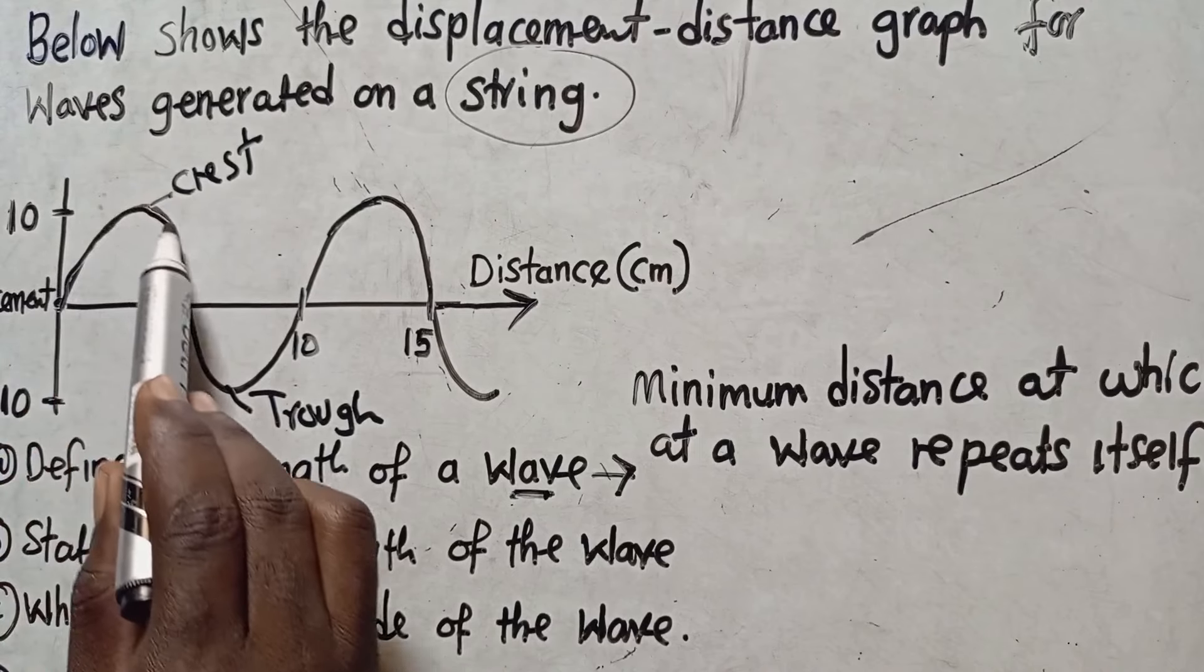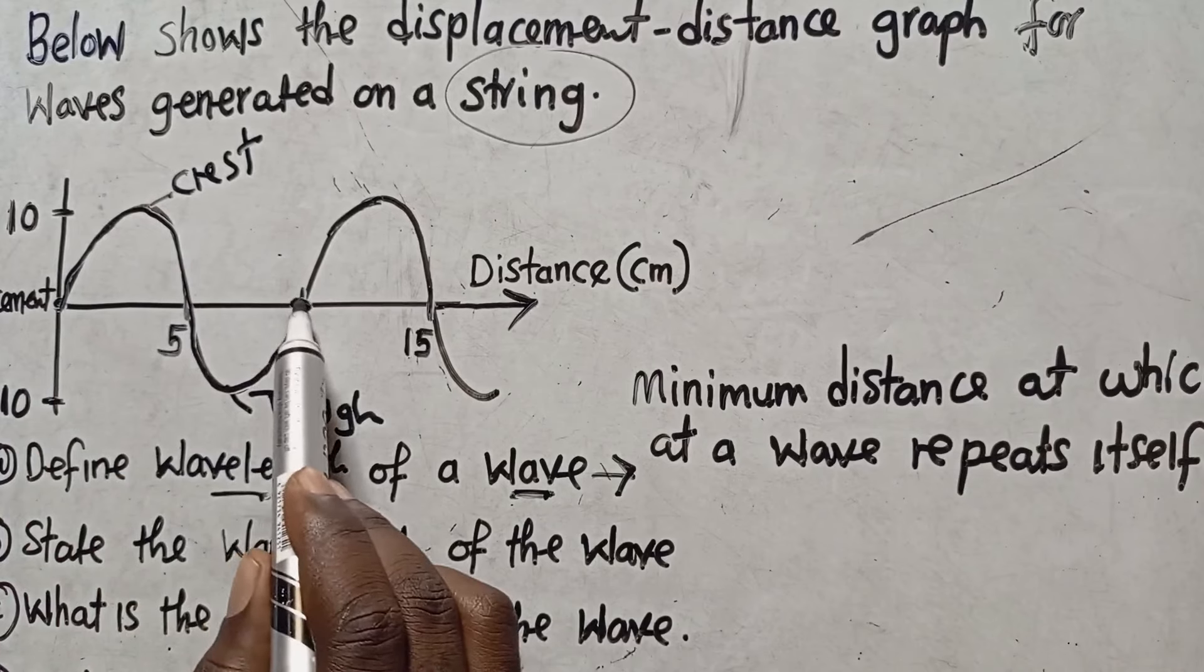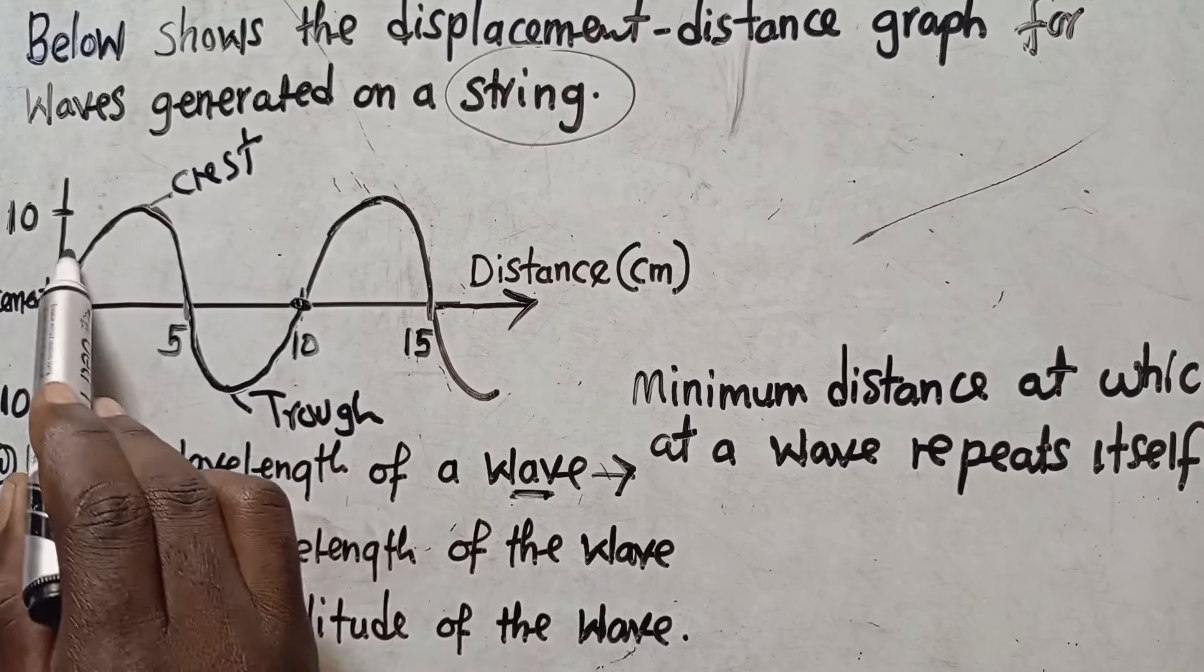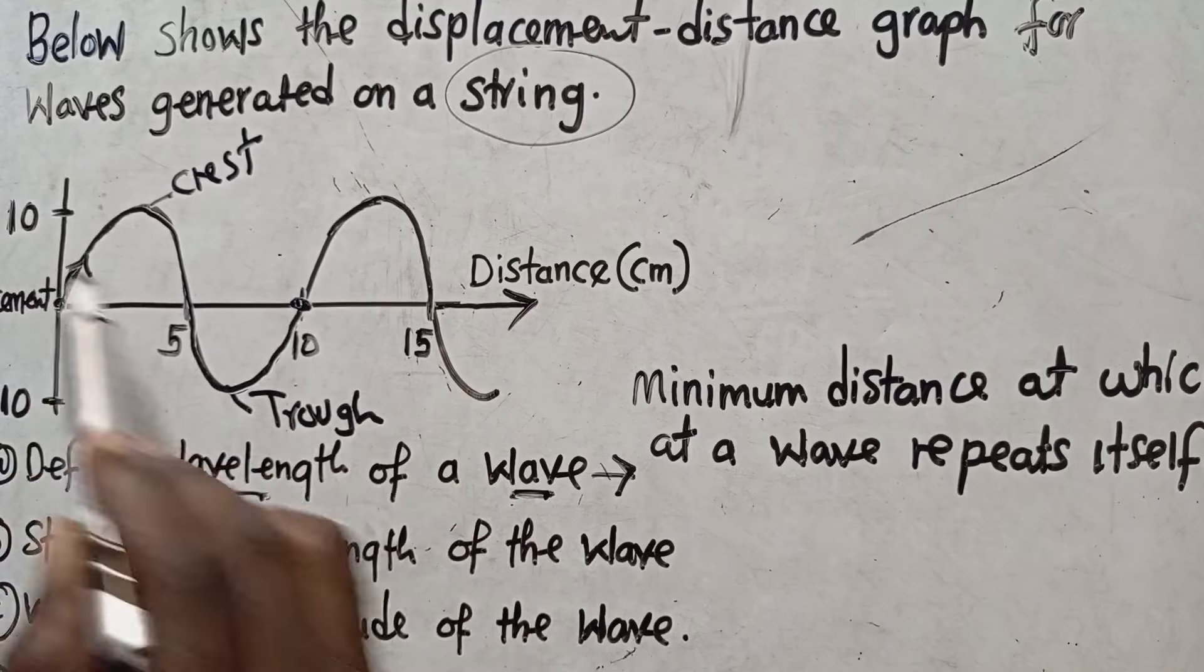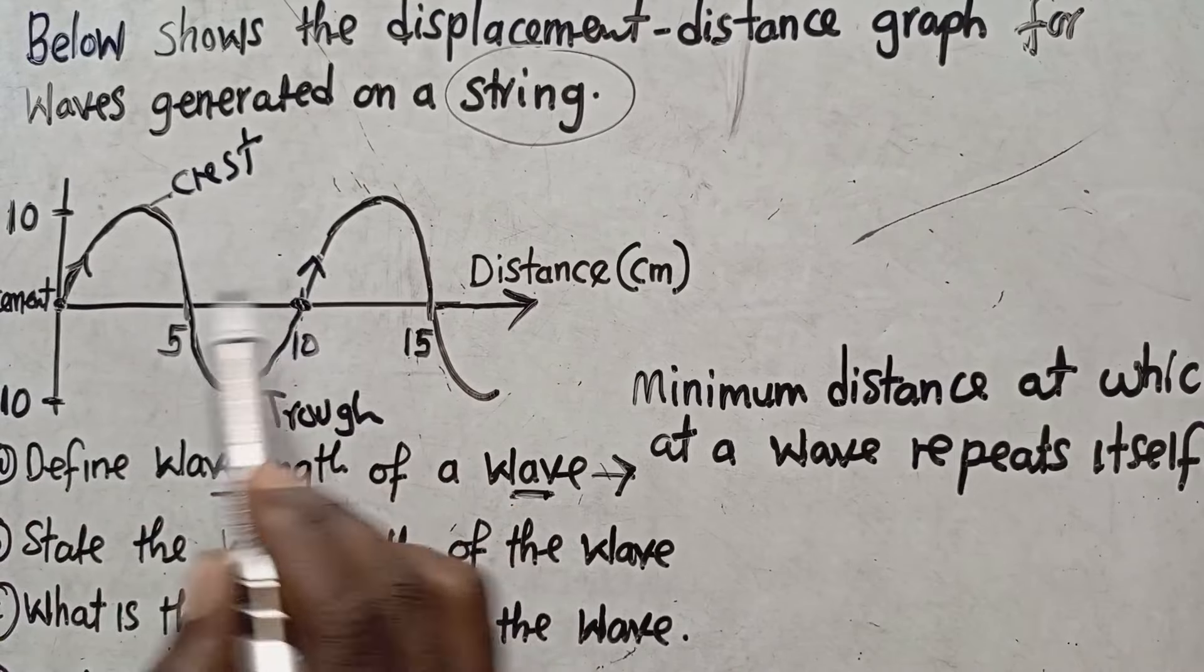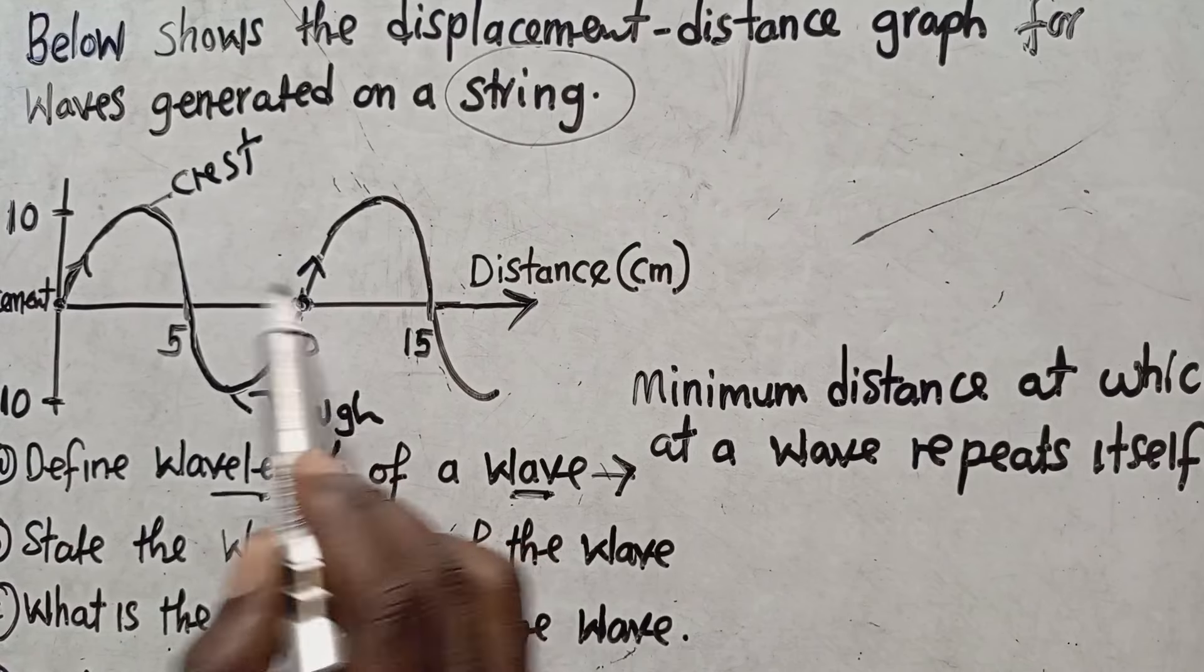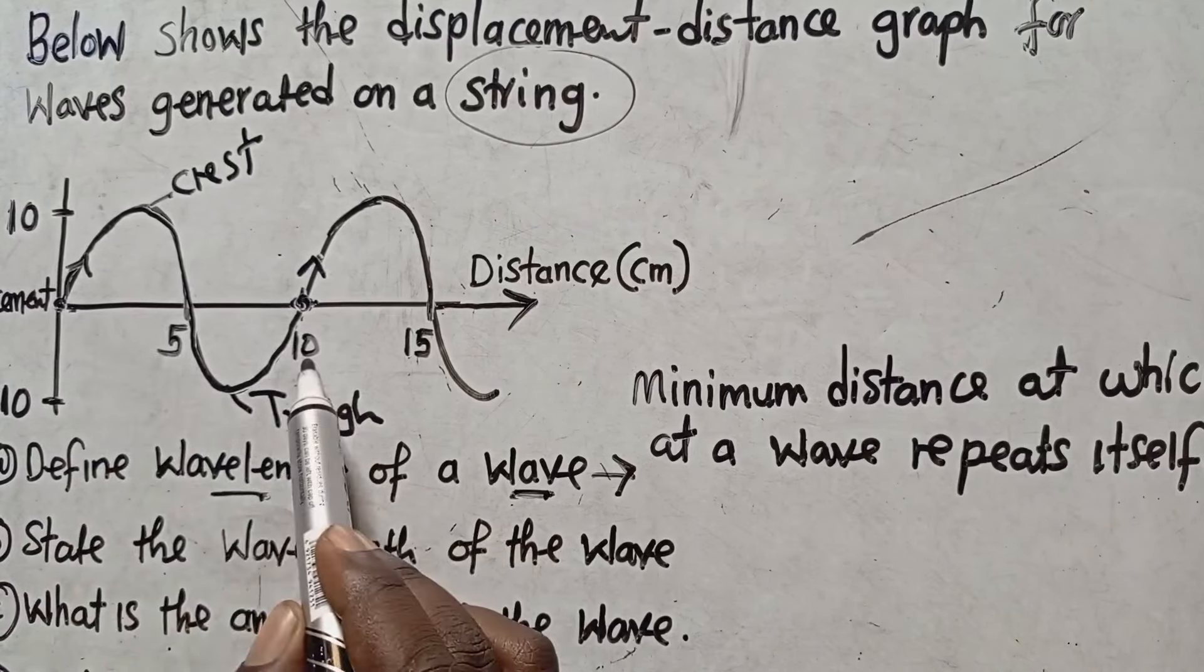So for us to have one wave we need to have a crest and a trough. Meaning when it is starting from here, it must move like this, moves like this until it reaches there. So when it reaches there it starts again. Obviously it started from here going upward, even here it is going to start from here. So this distance, obviously it will start repeating itself from this point. So this is the wavelength.